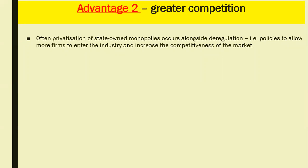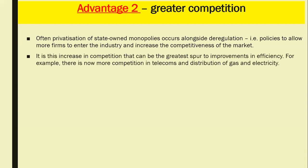A second advantage is economies of scale. Privatisation of state-owned monopolies often occurs alongside deregulation — governments will choose to privatise and also deregulate the industry. They sell off the once government-owned asset and deregulate the industry, making it easier for firms to operate, reducing barriers to entry and making the market more contestable. Policies to allow more firms to enter the industry increase the competitiveness of the market. It is this increase in competition that can be the greatest spur of improvements in efficiency. For example, there is now more competition in telecoms and distribution of gas and electricity.